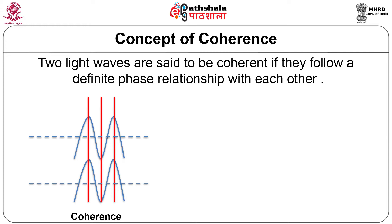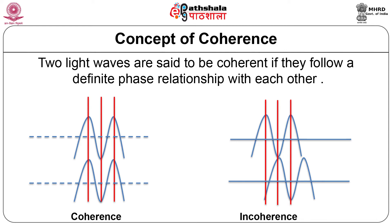Now let us begin with the properties of lasers; the first one is coherence. Two light waves are said to be coherent if they follow a definite phase relationship with each other. The figure in the slide shows what is meant by coherence. You can see there are two waves which are exactly in phase — their crests and troughs are exactly matching. However, if we consider the next figure, the two waves are coming at different times, hence they are not having the same phase, or they are incoherent.